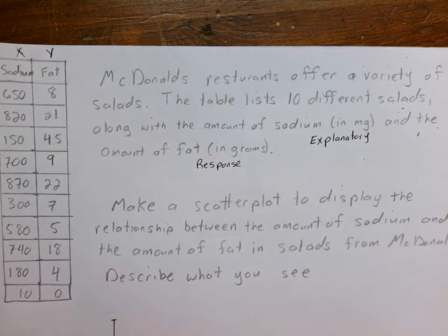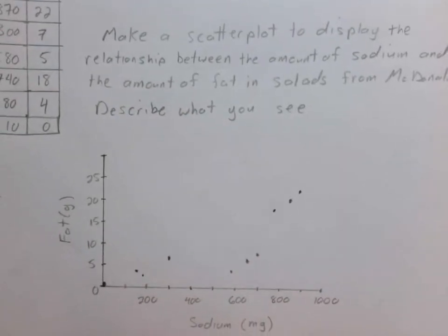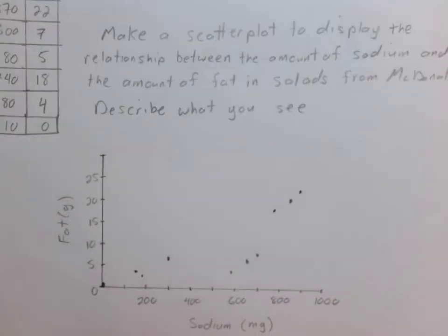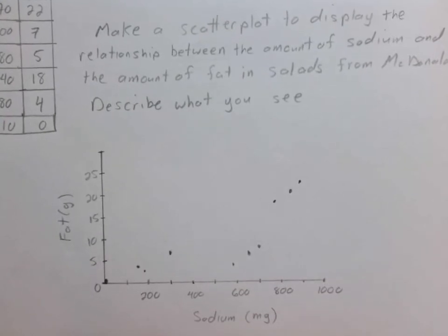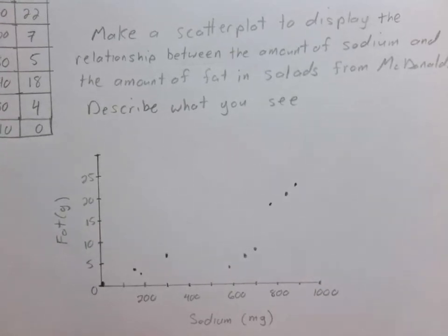That will dictate when we look at our scatter plot which one is our x and which one is our y. If I scroll down you can see the table I've created. You're looking for scale and labels. Our y-axis goes by fives and shows the amount of fat in grams, and along the x-axis we have our sodium in milligrams. The second part of that prompt was asking us to describe what we see — to describe that relationship.